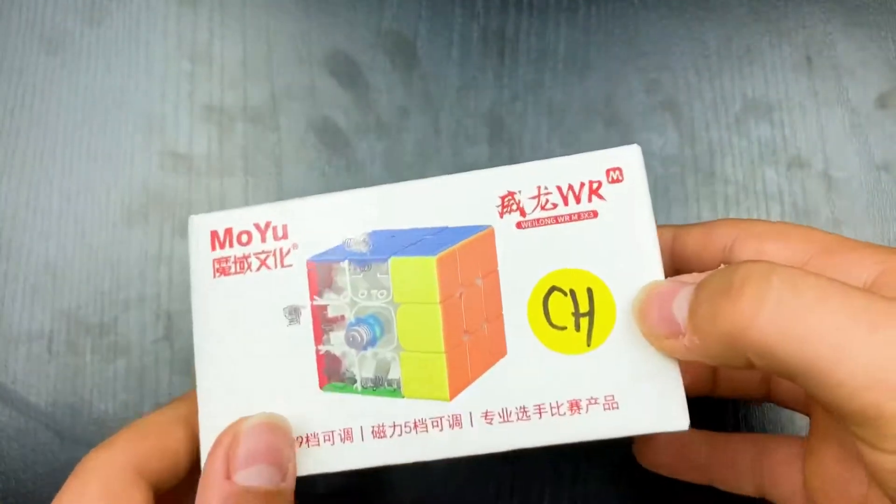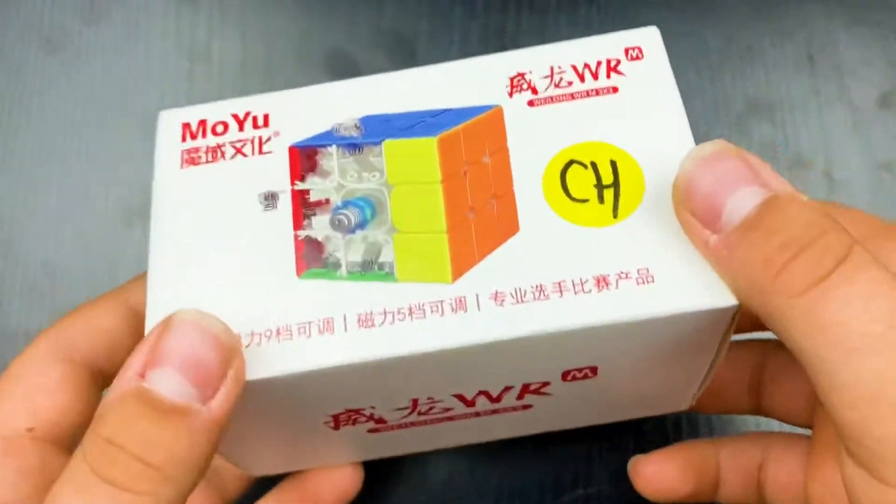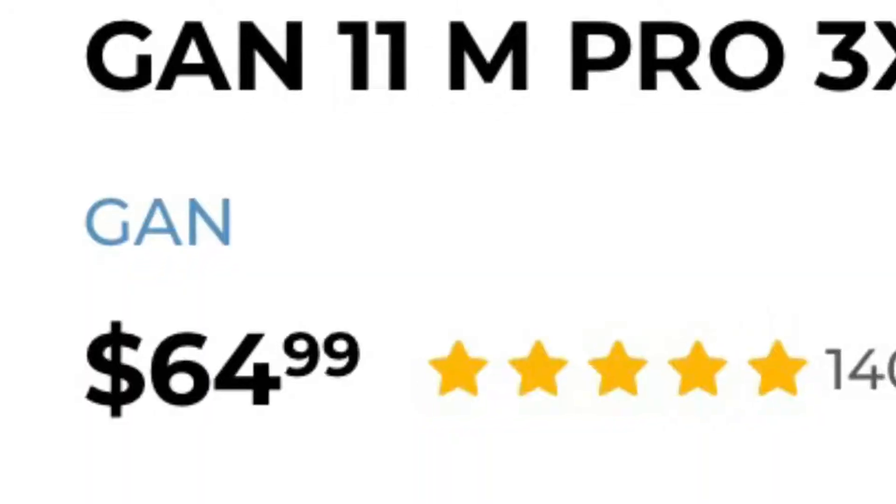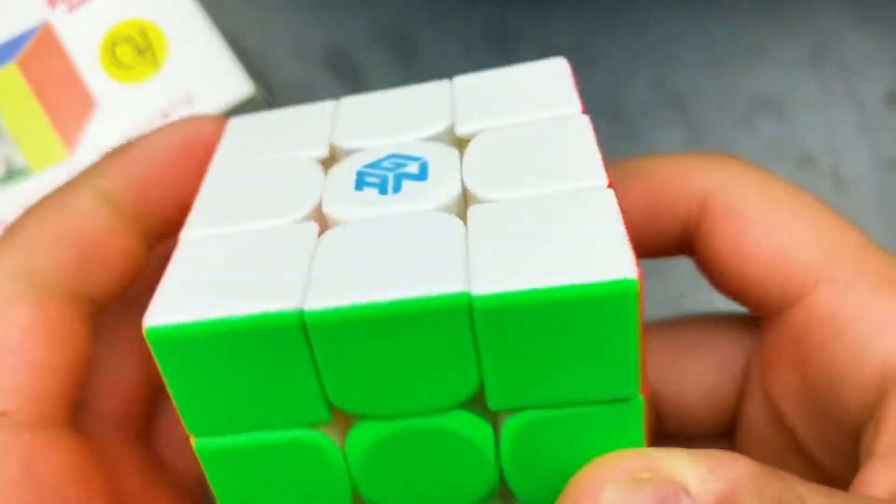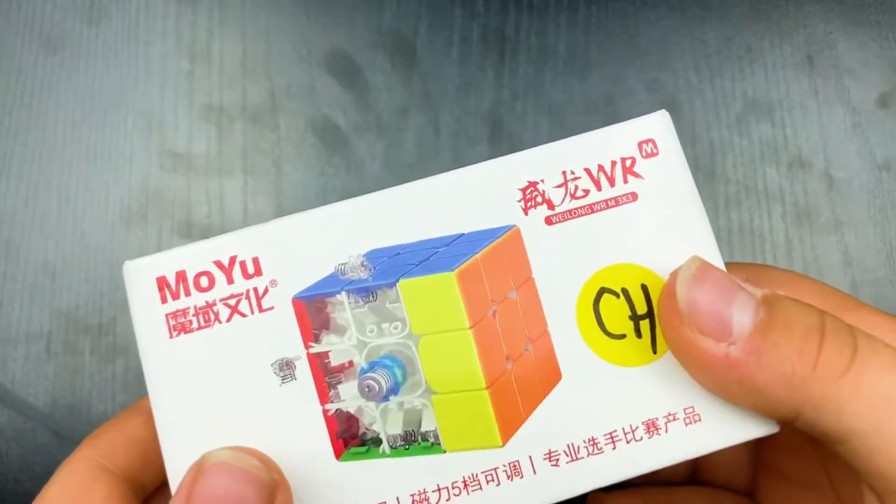I'm really happy I got this cube. I've heard it's better than the GAN 11M Pro and that's my current main. I am getting a bit sick of that feeling. GAN 11M Pro is definitely a nice cube. It's very expensive though and I just feel like I've been using it for a bit too long so I just want to move to something else. Hopefully this could be my new main. I've heard really good things about this cube actually.